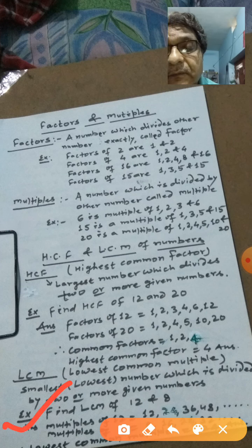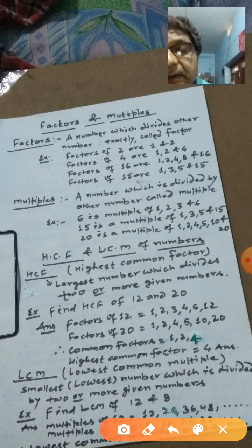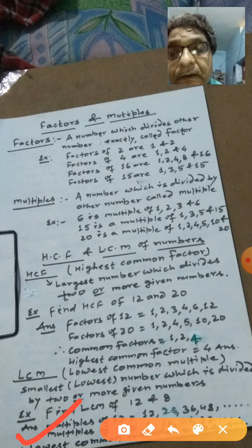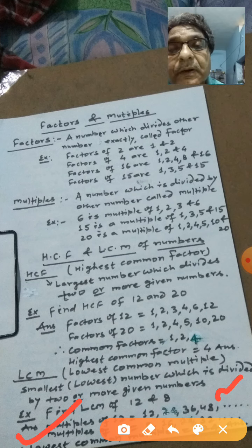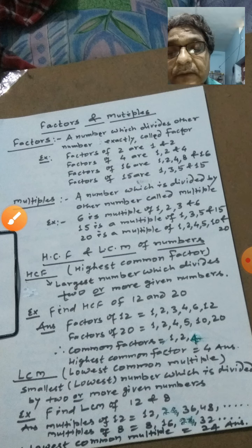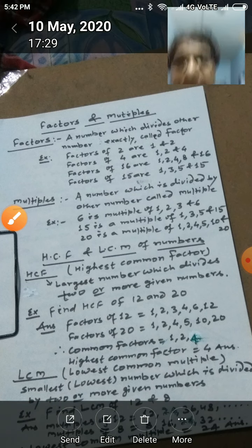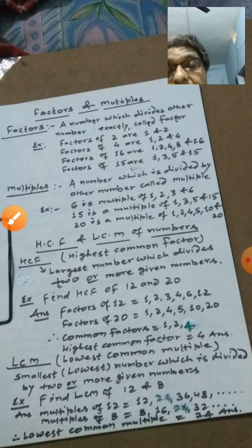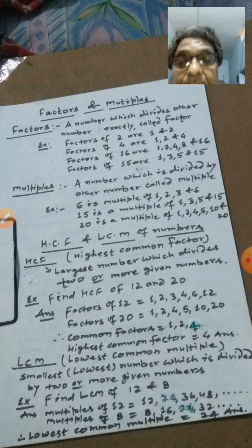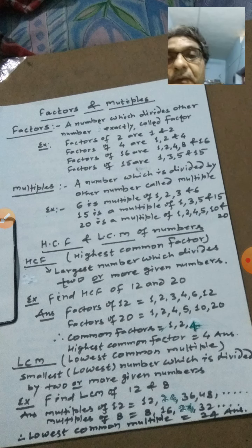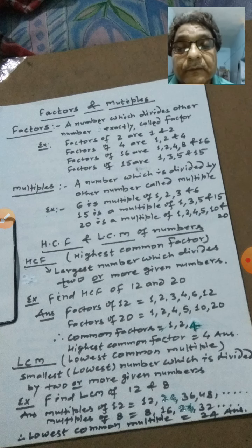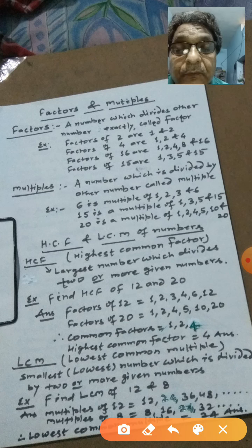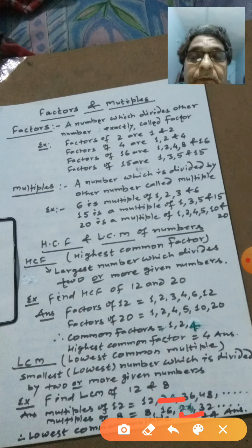Ek udaaharan lete hain — find LCM of 12 and 8. Hum log 12 ke pehle kuch multiples likhenge: 12, 24, 36, 48... yaani 12 ka multiplication table. Isi tarah multiples of 8: 8, 16, 24, 32... Ab hume inme se common aur lowest lena hai — yaani sabse pehla jo common multiple hoga. Aap gaur kijiye — sabse pehla common multiple dono mein 24 hai.